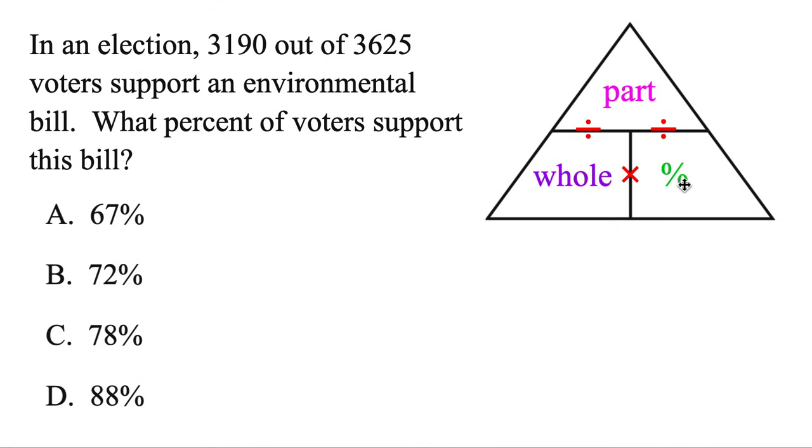But you'll always know two out of these three things. So let's check out this problem. In an election, 3,190 out of 3,625 voters support an environmental bill. What percent of voters support this bill? We're finding a percent, so we could go ahead and draw this triangle.